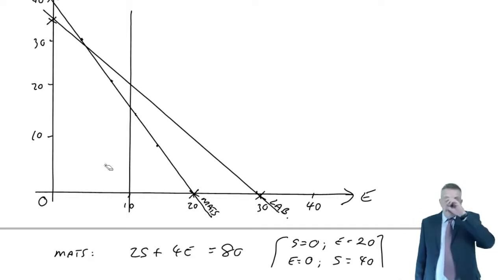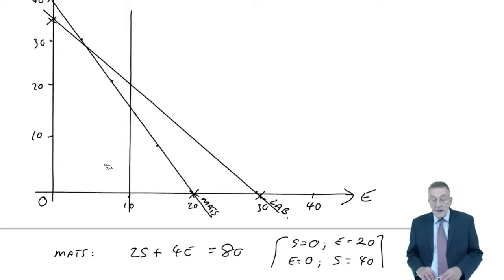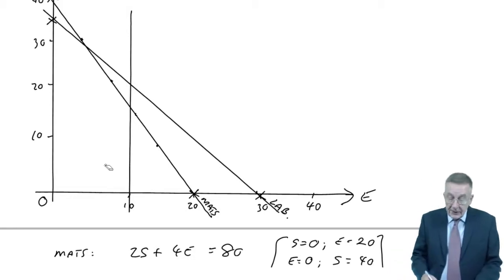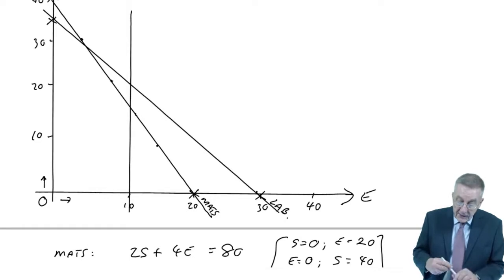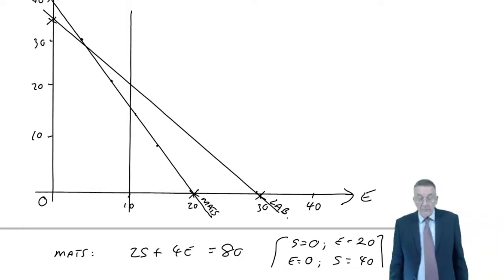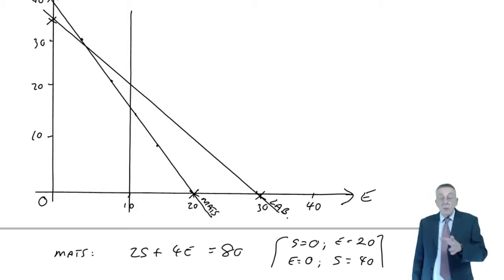Finally, we have the non-negativity. It couldn't be negative. Well, we don't actually need to draw anything, because any answer we end up with, S must be greater than zero, E must be greater than zero, and those lines are there. And so we've now got all the constraints on the graph.